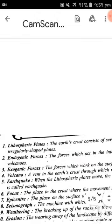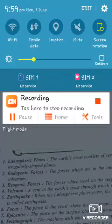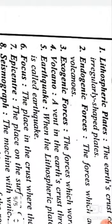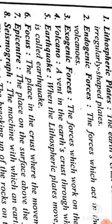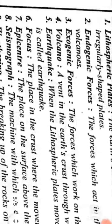Endogenic Forces are the forces which act in the interior of the Earth. Exogenic Forces are forces like rivers and wind that act on the Earth's surface. A Volcano is a vent in the Earth's crust through which molten material erupts suddenly.